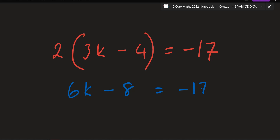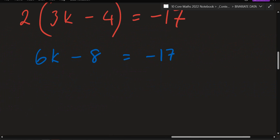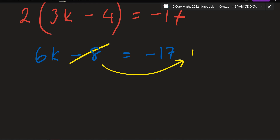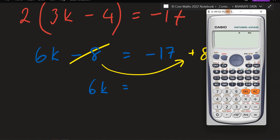You're just left with equals negative 17. Now this looks familiar — you're isolating k, making k by itself. Move the negative 8 first — it's a minus 8 so if you bring it here it becomes plus 8. So you get 6k equals negative 17 plus 8. What's negative 17 plus 8? Use your calculator if needed. Negative 9.